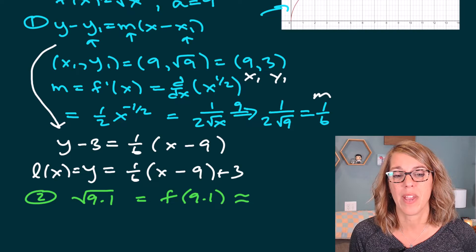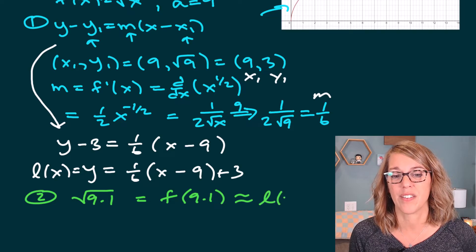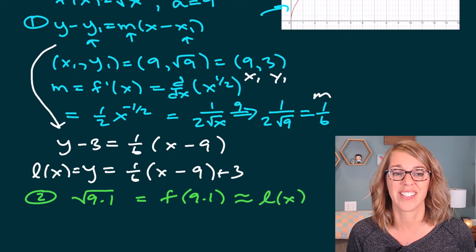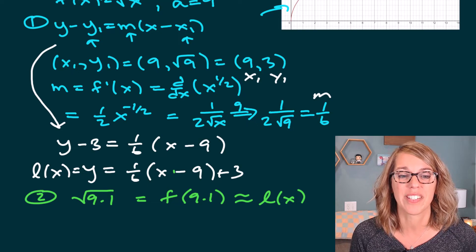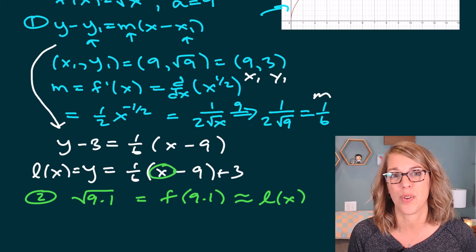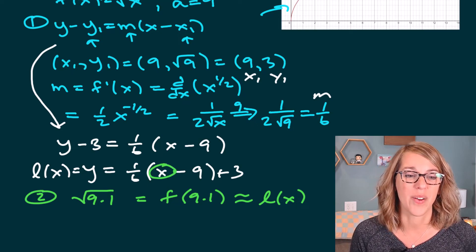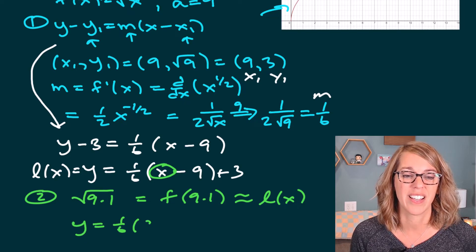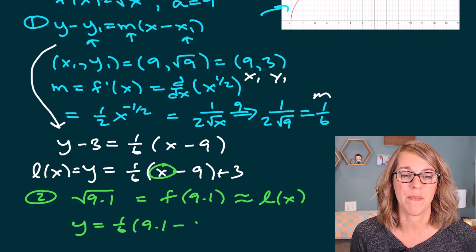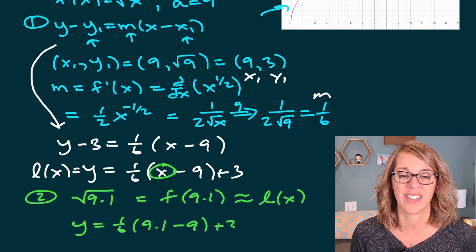Well, we're approximating f with the linear function L(x). So really, this just boils down to plugging in 9.1 right here. So what do we get? We get y is equal to 1/6 times (9.1 minus 9) plus 3.